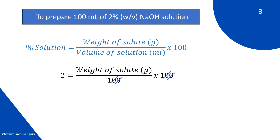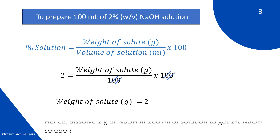The 100 and 100 cancel each other out, and by calculating we get the weight of solute required in grams equals 2. Hence, dissolve 2 grams of NaOH in 100 ml of solution to get 2% NaOH solution.